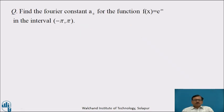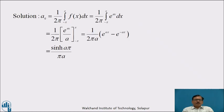Now pause the video for a while and find the Fourier constant a naught for the function f(x) equal to e raised to ax in the interval minus pi to pi. Here we calculate a naught using the formula 1 by 2π integration from minus pi to pi of f(x) dx, which equals 1 by 2π integration from minus pi to pi of e raised to ax dx, equal to 1 by 2π times e raised to ax by a with limit minus pi to pi. Putting upper limit gives e raised to aπ minus e raised to minus aπ, and as we know e raised to aπ minus e raised to minus aπ divided by 2 is sinh(aπ), so a naught equals sinh(aπ) divided by πa.